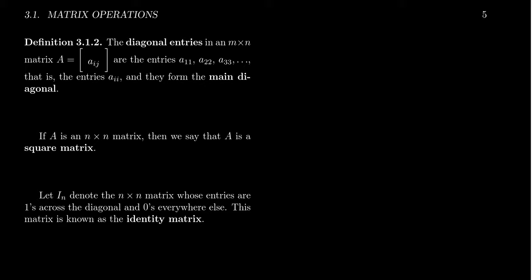The first idea is about the diagonal entries of a matrix. In an n by n matrix A whose generic entry is A_ij, the diagonal entries are those whose indices are identical: the A_11 position, the A_22 position, the A_33 position — all numbers of the form A_ii. These are called the main diagonal of your matrix.